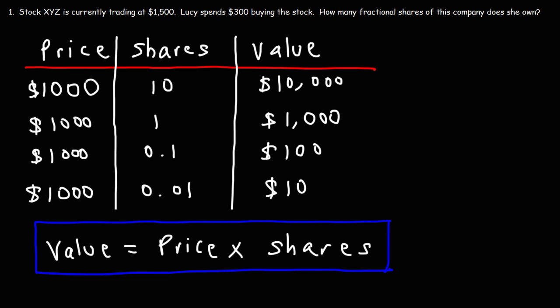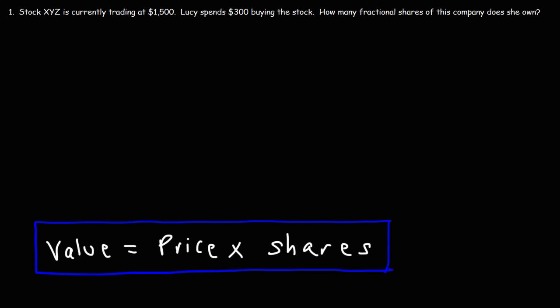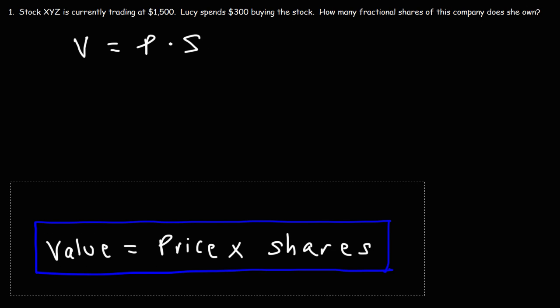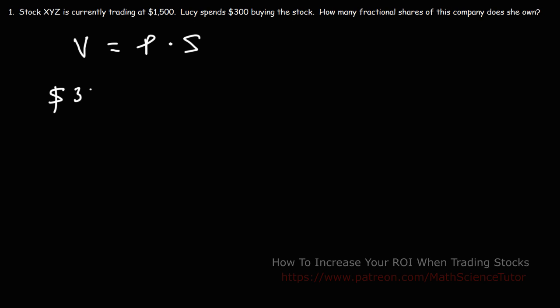Now let's use that equation to answer a problem. Stock XYZ is currently trading at $1,500. Lucy spends $300 buying the stock. How many fractional shares of this company does she own? Using this formula, V = P × S — the value of her investment equals the price of the stock times the number of fractional shares she owns. The value of her investment is $300, and the price of the stock is $1,500.